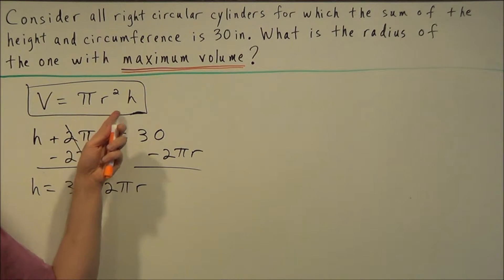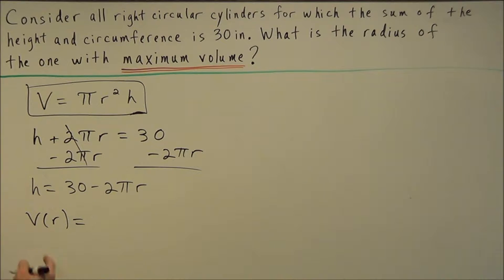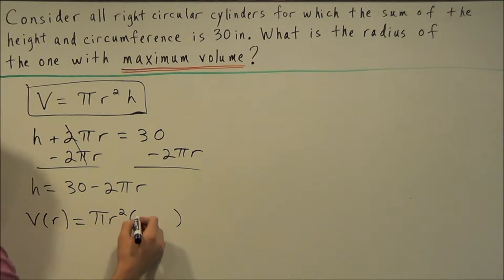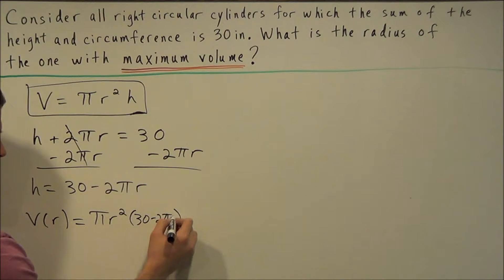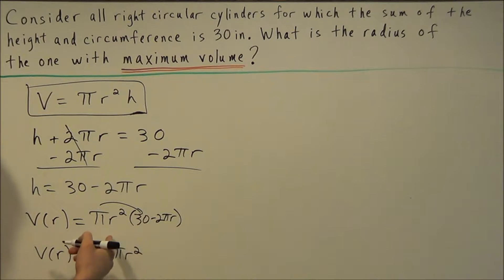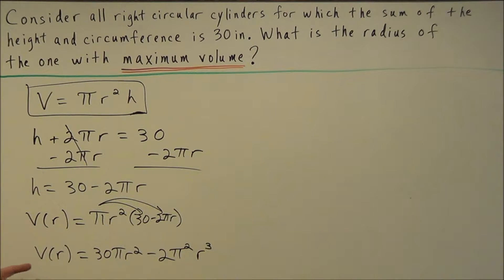For the next step, we're going to make our primary equation into a function of r by replacing h with an expression involving r. So we'll have V(r) equals π r squared times h, which we replace with 30 minus 2πr. Distributing to simplify, we get V(r) equals 30π r squared minus 2π squared r cubed.